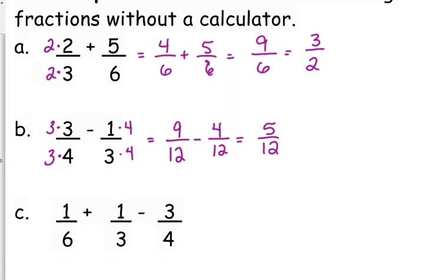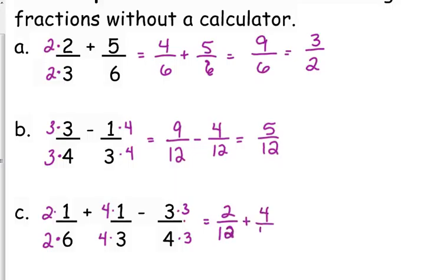The same premise applies if we've got to do three of them — we just got an extra one in there. The common denominator here is still twelve. Multiply the first one by two, the second one by four, and the last one by three. I'm sure you can probably do most of this in your head, but I'm drawing a parallel to what we're doing today. So two plus four is six, six minus nine is negative three, and that will simplify to negative one-fourth.